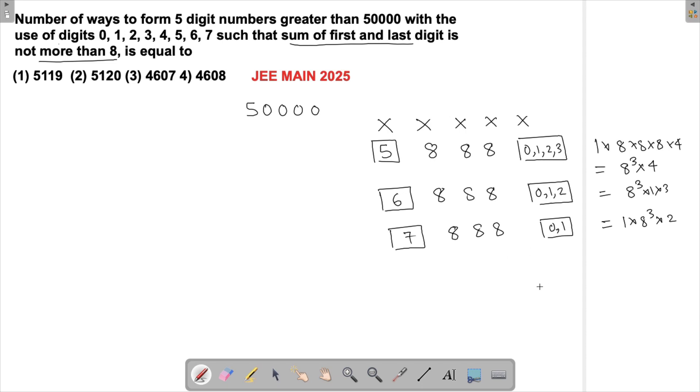These are all the cases. Now we've got to sum it up. The first one is 8³ × 4, the second one is 8³ × 3, and the third one is 8³ × 2. I can take 8³ out, and what I get is 8³(4 + 3 + 2), which is going to give me 8³ × 9.